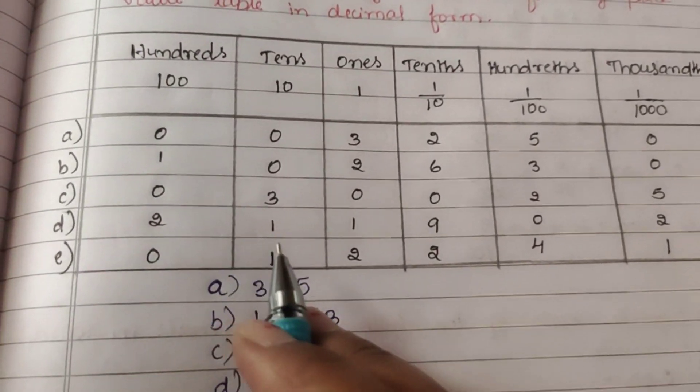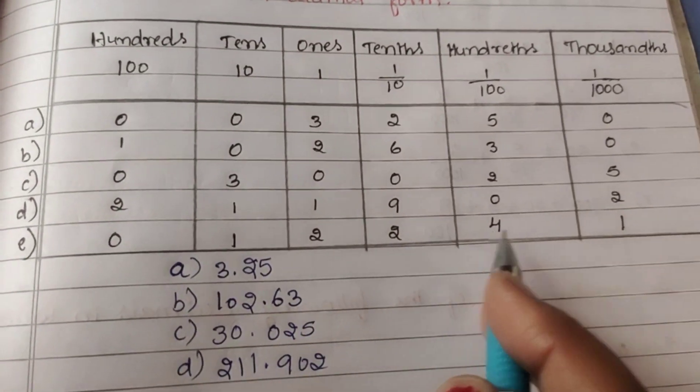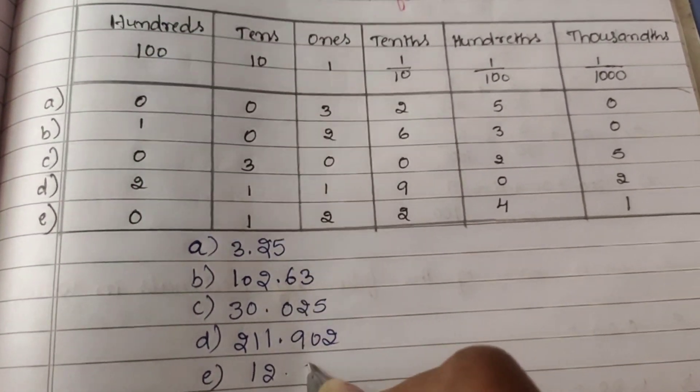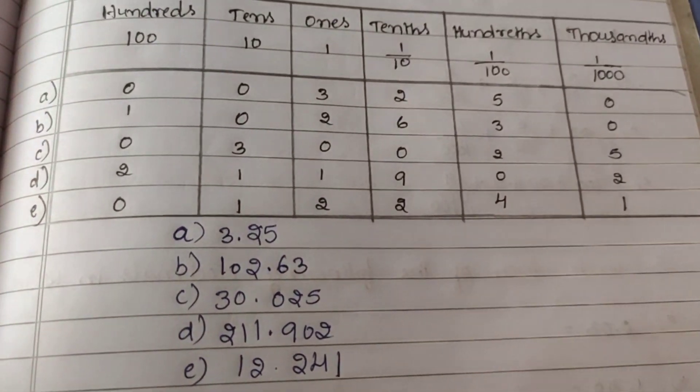Now 1, 2, 2, 4, 1. The zero here can be omitted, giving 12.241.